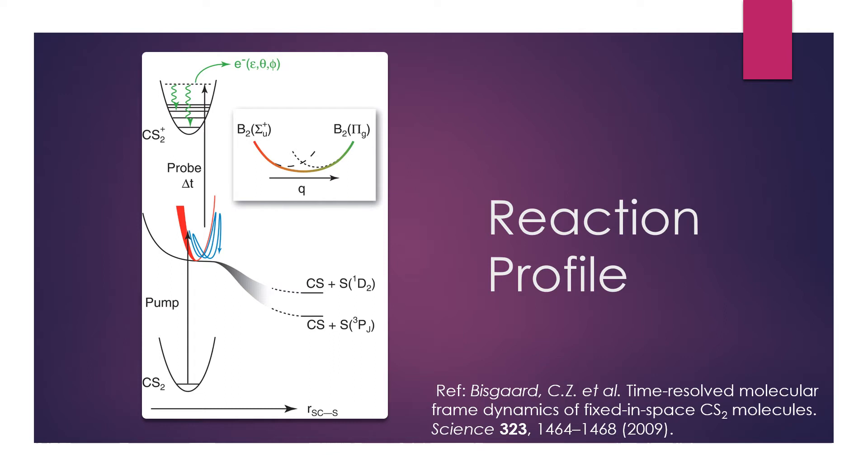The pump photon excites the molecule into an initially linear state. The bandwidth of the pump probe is large enough that two vibrational levels are both populated in this excitation. The development of the electrons in this state is measured by the probe photon.